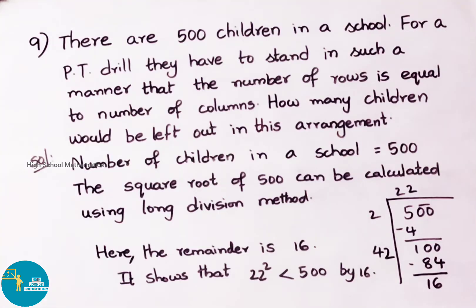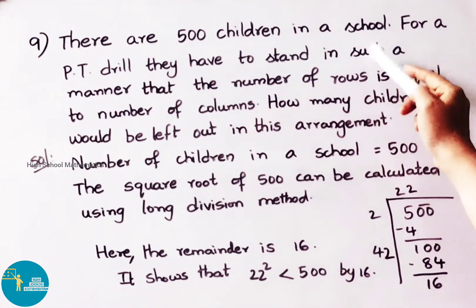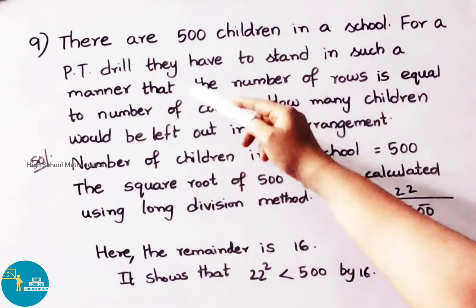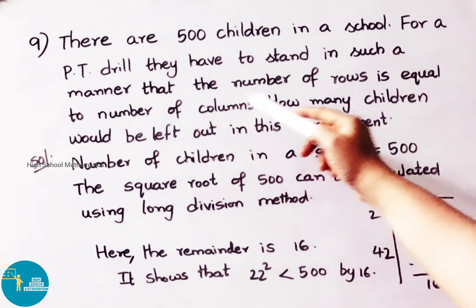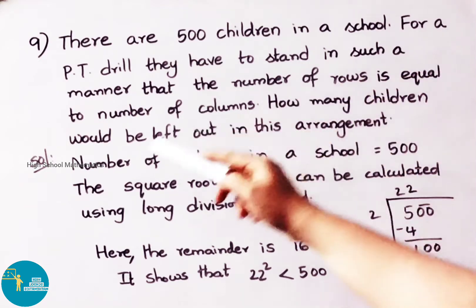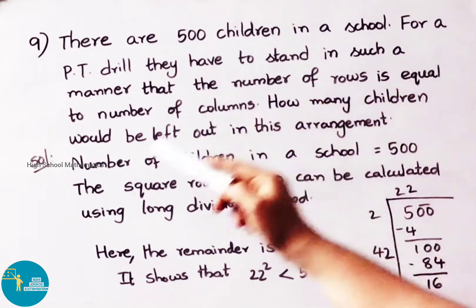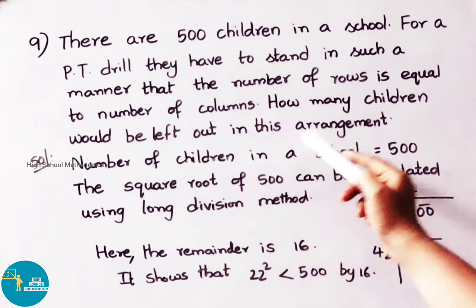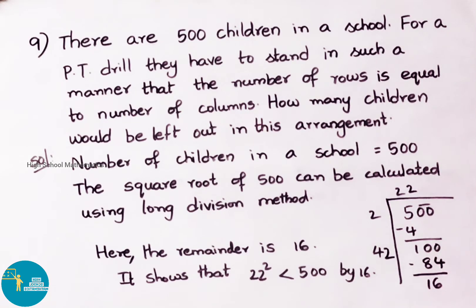See now question number 9. There are 500 children in a school. For a PT drill they have to stand in such a manner that the number of rows is equal to the number of columns. How many children would be left out in this arrangement? Let us see the solution. The number of children in the school is 500.